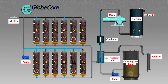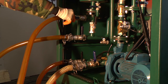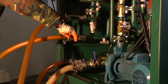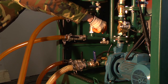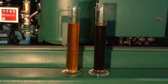During operation, part of the columns regenerate oil while the rest are in sorbent reactivation mode. After reactivation is complete, the machine is ready for operation again. The bypass line opens and the regeneration system and the degasser continue to treat the oil in tandem.